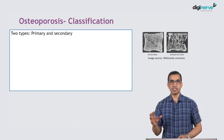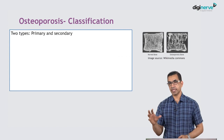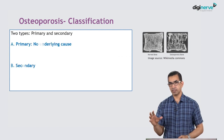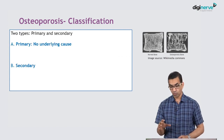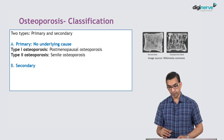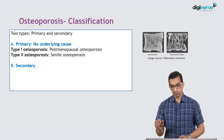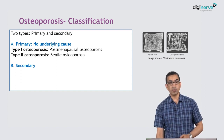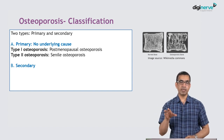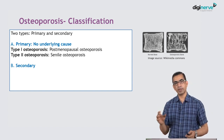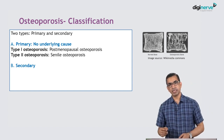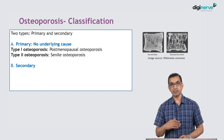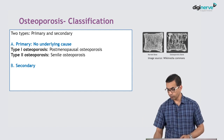How do we classify osteoporosis? There are two types: primary, where there is no underlying cause, and secondary. In primary, Type 1 osteoporosis is postmenopausal, which happens in women after menopause, and Type 2 is senile — that is, age-related osteoporosis.